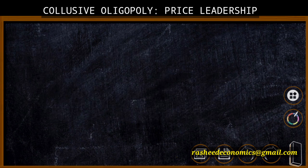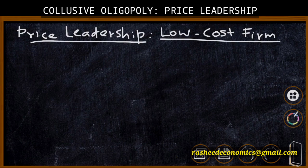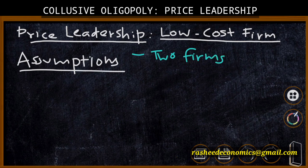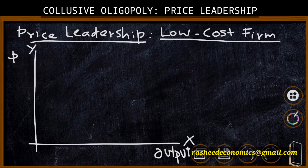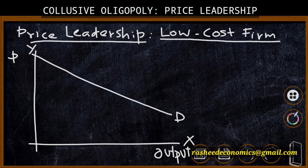We are now going to explain price leadership by a low-cost firm. The assumptions are: there are two firms, Firm A and Firm B; Firm A is the low-cost firm and Firm B is the high-cost firm; and products are homogeneous. We explain price-output determination with a diagram. On the X-axis we have output and on the Y-axis we have price. We assume that the two firms have equal market share, so there is a market demand curve D and an individual demand curve (small d).